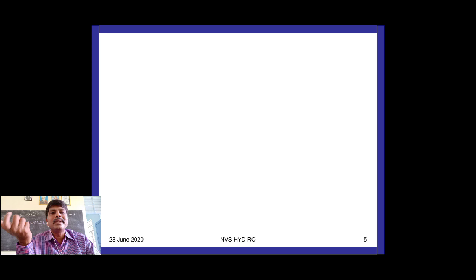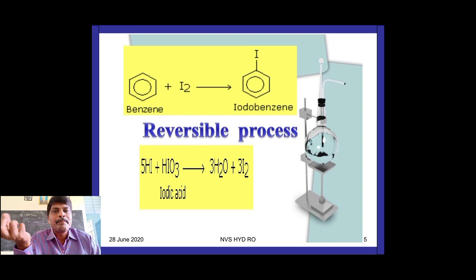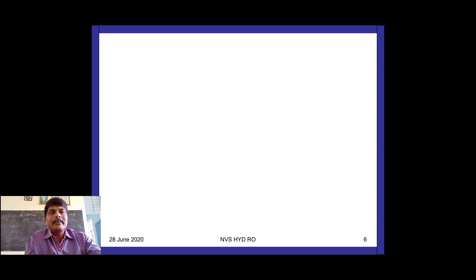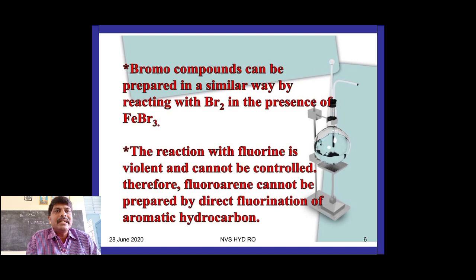Toluene is also an ortho and para directing group, so it gives two products; para is the major product. To get chlorobenzene treat benzene with chlorine; for bromobenzene treat with bromine. For iodobenzene, benzene is treated with iodine, but this reaction is reversible because HI is also formed, and HI converts the product back — so iodination is a reversible process.